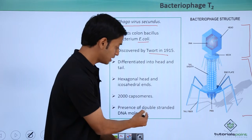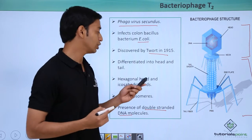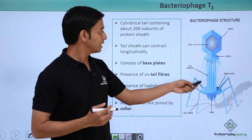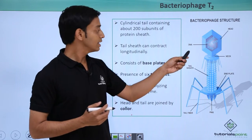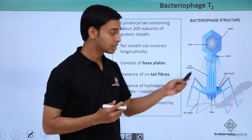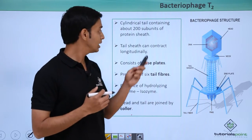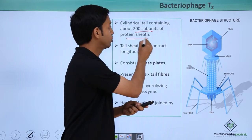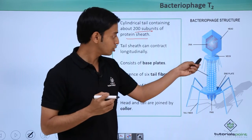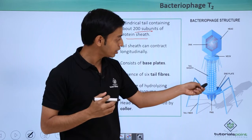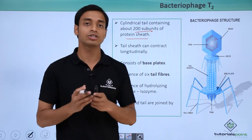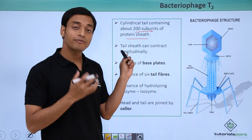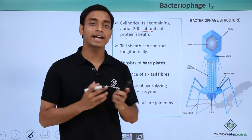The genetic material for these viruses is a double-stranded DNA molecule. The virus has a cylindrical tail with about 200 protein subunits, which you can see as protein sheets arranged around the tail.